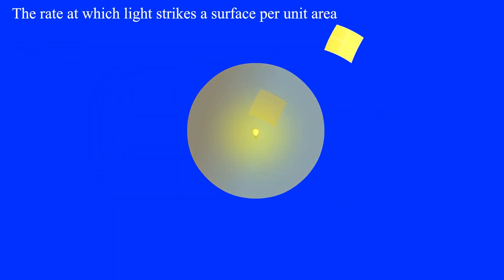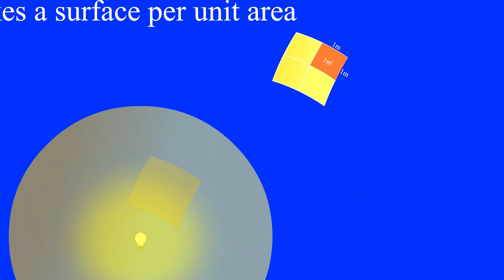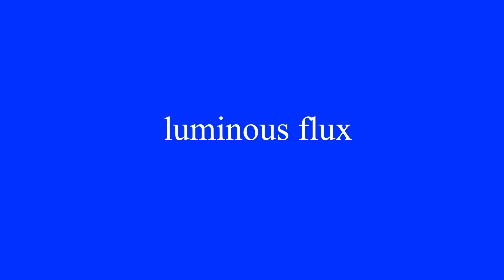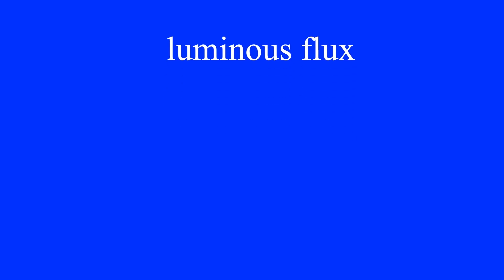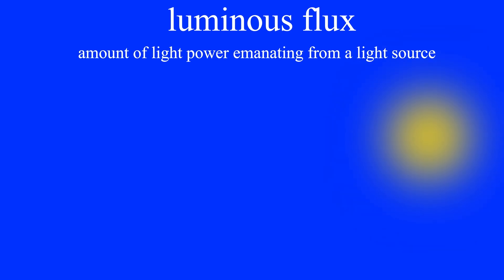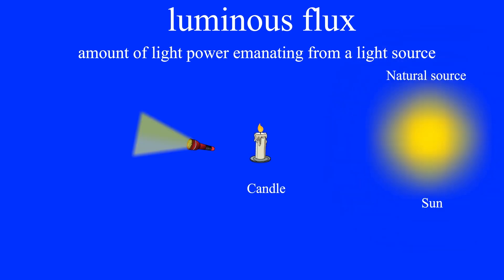Illuminance is defined as the rate at which light strikes a surface per unit area. Illumination is represented by the symbol E. In order to learn more about illuminance and its unit of measurement, we must first learn about luminous flux. Luminous flux is defined in photometry as the amount of light power emanating from a light source, whether this source is natural such as the Sun, or artificial such as lamps of various types.